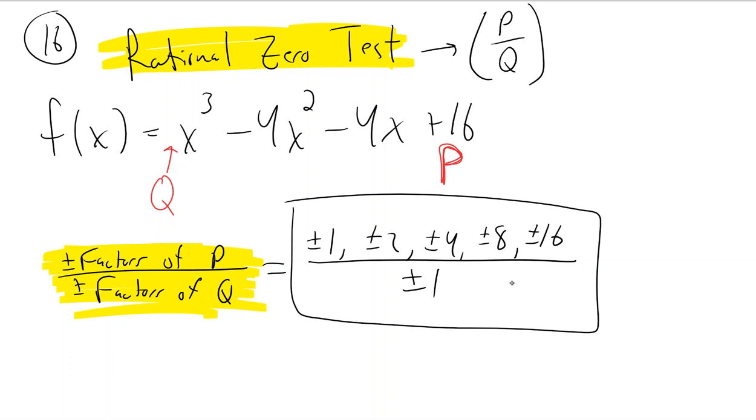But basically any of these numbers over any of these numbers are the only possible zeros that are rational numbers. So there might still be some imaginary zeros, there might be some zeros with like a square root of 3. It doesn't help us find any of those, but for the rational numbers it has to be in this list.